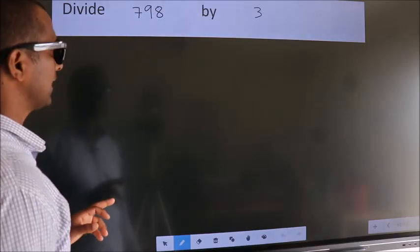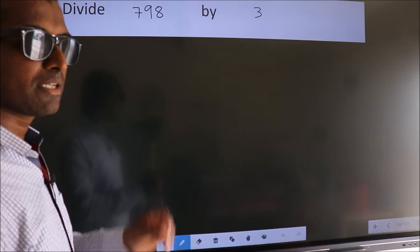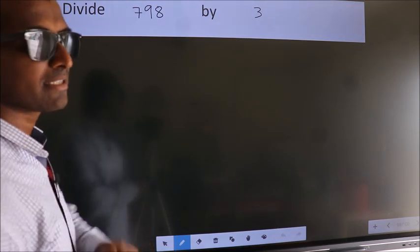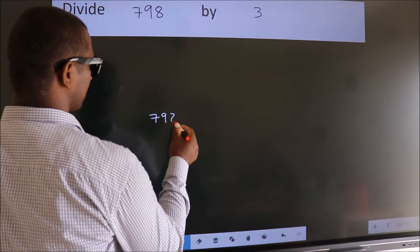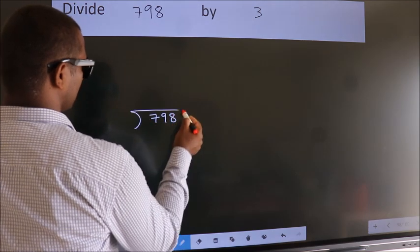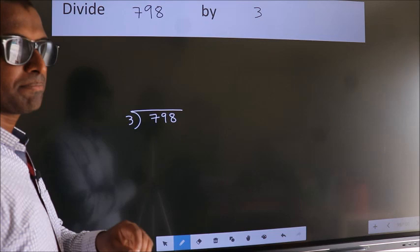Divide 798 by 3. To do this division, we should frame it in this way. 798 here, 3 here. This is your step 1.